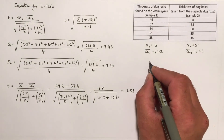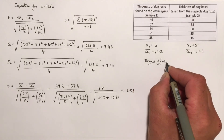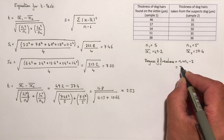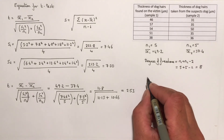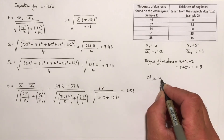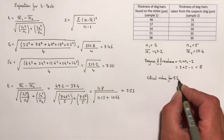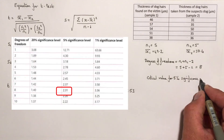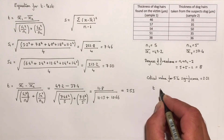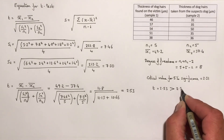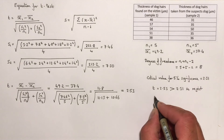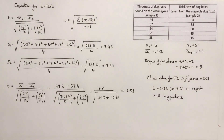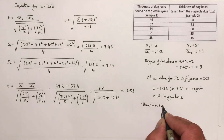The degrees of freedom equals n1 plus n2 minus two, so five plus five minus two equals eight. Looking up the critical value table at five percent significance with eight degrees of freedom gives 2.31. Our calculated t value is 2.53, which is greater than 2.31, so we reject the null hypothesis. We conclude there is a significant difference between the two samples of dog hair.